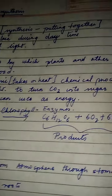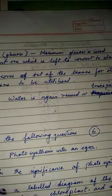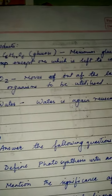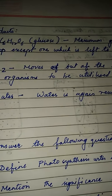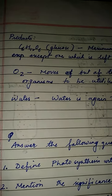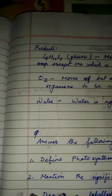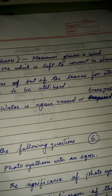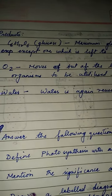The product we get is glucose. Most of the glucose is used up, except a portion which is left to convert to starch. When we study the light phase reaction, we will learn more about what happens to the glucose. Oxygen moves out of the leaves for organisms to utilize.